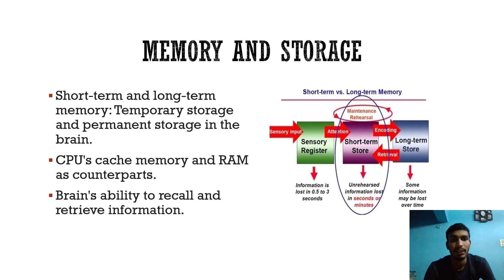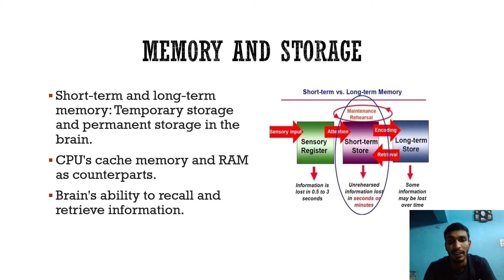Memory and storage: the brain has short-term and long-term memory, representing temporary and permanent storage, with the CPU's cache memory and RAM as counterparts. The brain also has the ability to recall and retrieve information. Sensory inputs provide sensory registers; attention leads to short-term storage; encoding produces long-term storage, and retrieval brings information back to short-term storage.